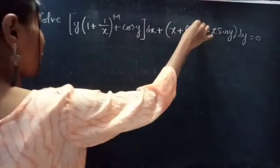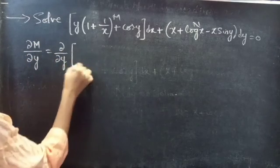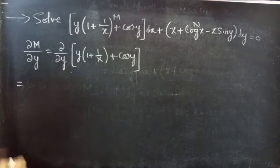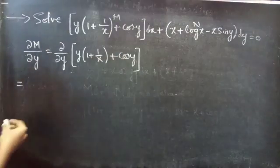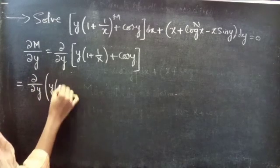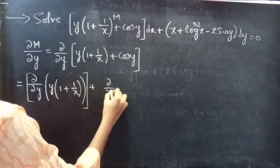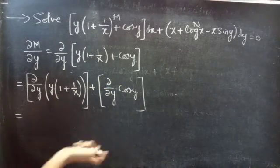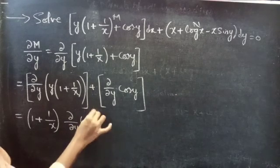This is your M and this is your N. Now we will find the partial derivative of M with respect to y. This equals to ∂/∂y of M, which is y times (1 plus 1 by x plus cos y). This equals to ∂/∂y of y times (1 plus 1 by x) plus ∂/∂y of cos y. Here 1 and 1 by x are constants, so you can write the constants separately into the derivative of y with respect to y.